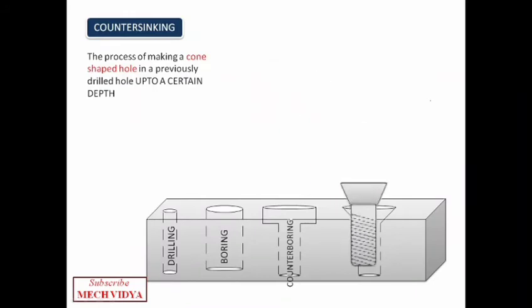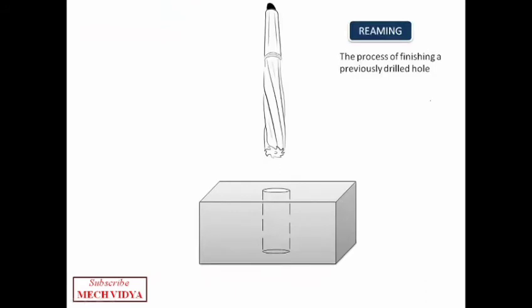Now after boring let us try to understand a surface finishing operation for internal surfaces known as reaming. Reaming removes very small amount of material to improve the inner surface quality of the hole. The tool here is called a reamer.